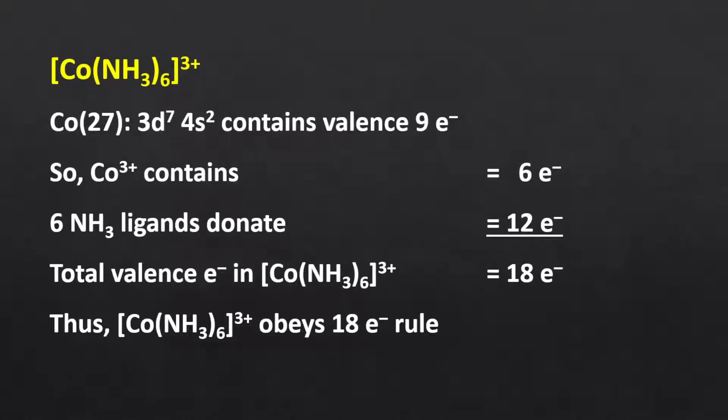Consider the example of hexamine cobaltate ion. The atomic number of cobalt is 27, so the electronic configuration of its valence shell is 3d7, 4s2. The oxidation state of cobalt in this complex is +3. Thus, there are 6 valence electrons. Also, each ammonia ligand will donate 2 electrons, so overall 12 electrons from 6 ligands. Consequently, the total valence electron count in this complex is 18, meaning the complex follows the 18 electron rule and is stable.